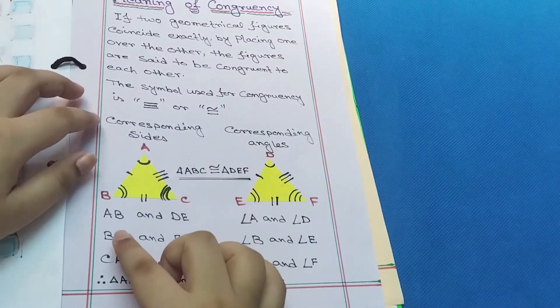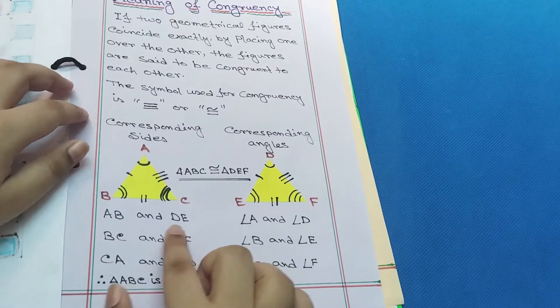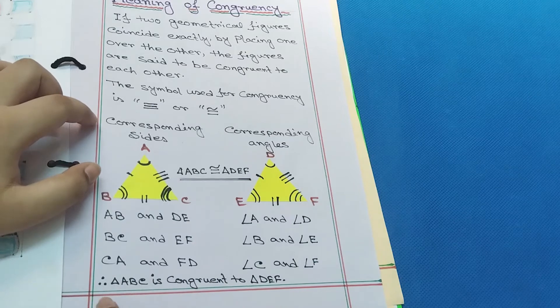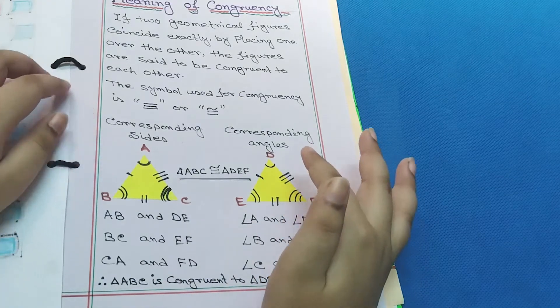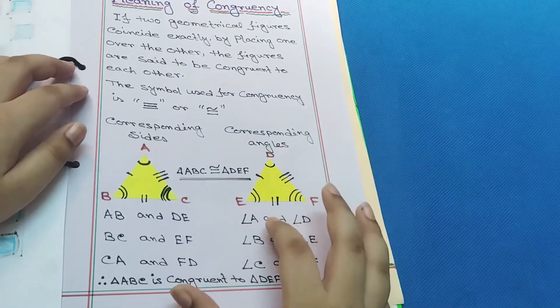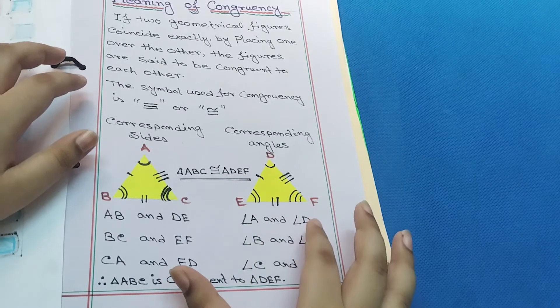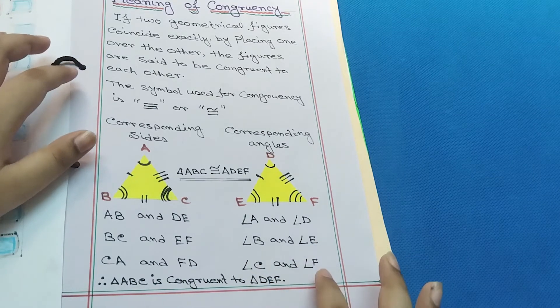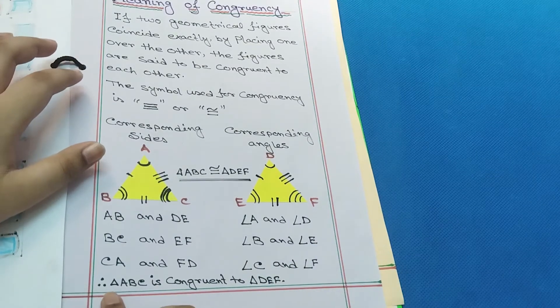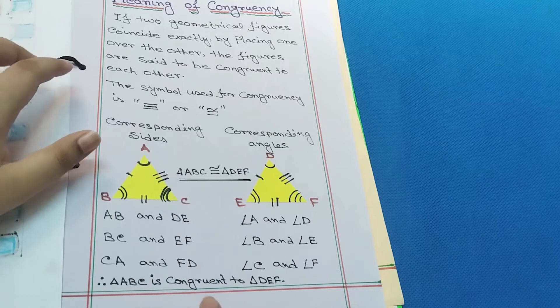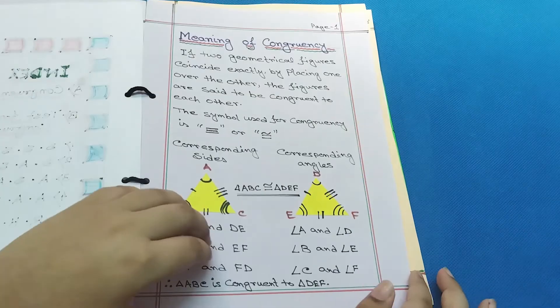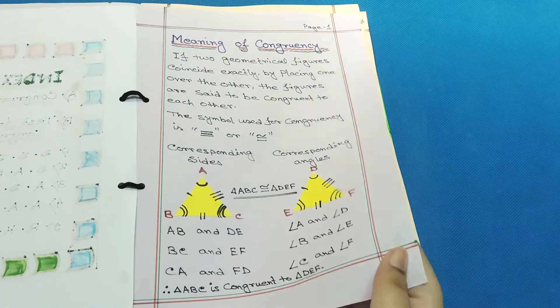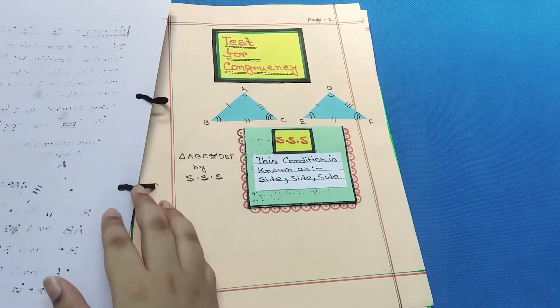AB equals DE, BC equals ES, CA equals FD. And the corresponding angles: angle A equals angle D, angle B equals angle E, angle C equals angle F. Therefore, triangle ABC is congruent to triangle DEF. That's the meaning of congruency.